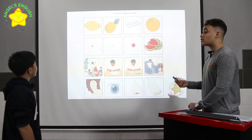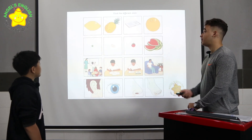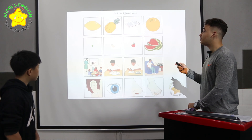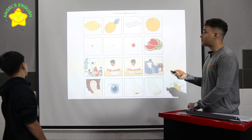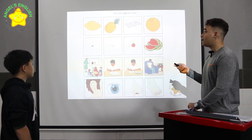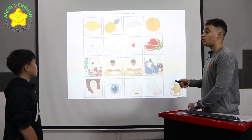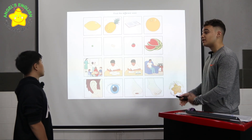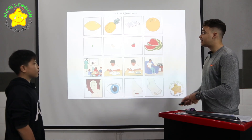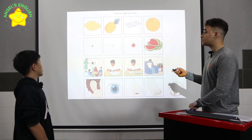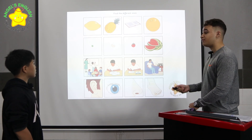Okay, very good. This is called find the different one. In row one, the book is different because the lemon, the pineapple, and the orange are all fruits. Can you tell me the different ones in rows two, three, and four?